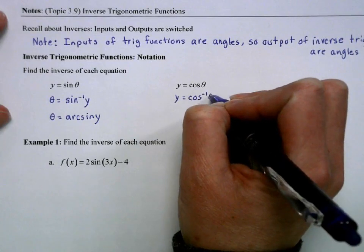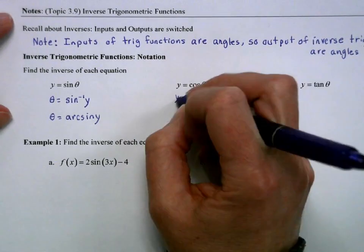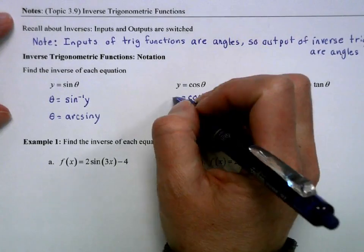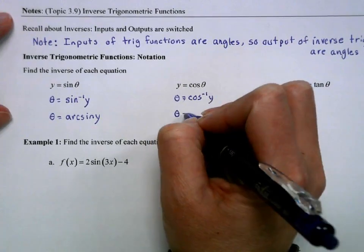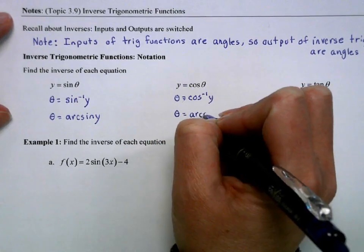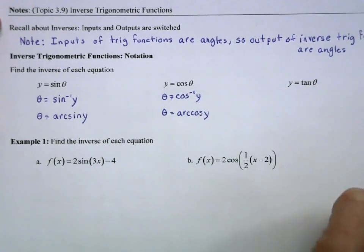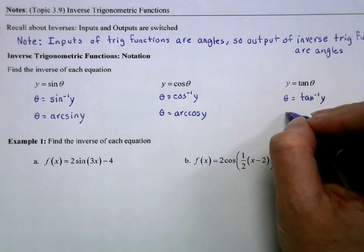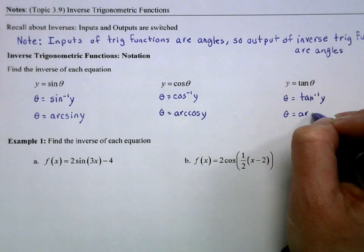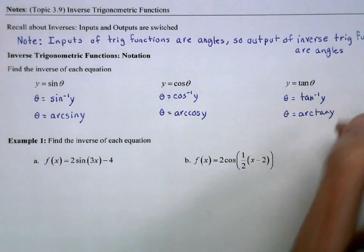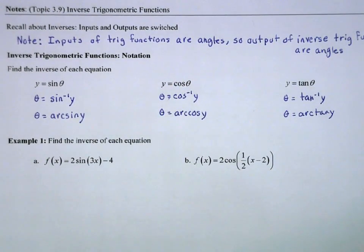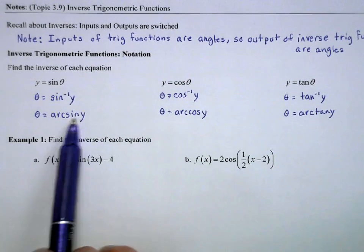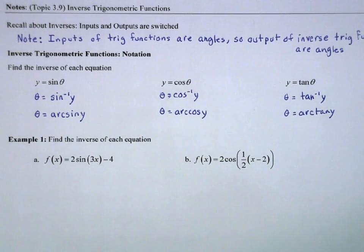For cosine: cosine inverse of theta — switch. And again it has the arc definition, so theta is equal to the arc cosine of y. Repeat this with tangent: theta equals tangent inverse of y, or theta is arctan of y. You'll see those notations pretty interchangeably, either with the negative 1 symbol or the whole word written out. You can use either, but you need to understand that those are exactly the same thing, just different presentations.